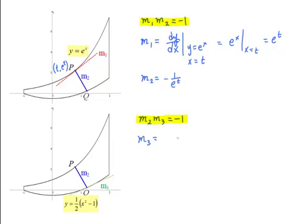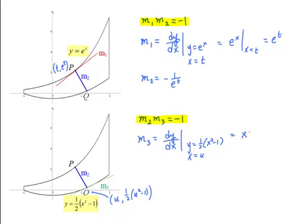Similarly, m3 can be computed by differentiating y equals half(x squared minus 1). The coordinates of Q are (u, half(u squared minus 1)), so x equals u. Differentiating half(x squared minus 1) we get x, and substituting x equals u gives m3 equals u. Since m2 times m3 equals negative 1, m2 equals negative 1 over u.